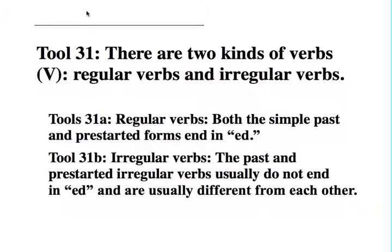Tool 31. There are two kinds of verbs: regular verbs and irregular verbs. Section 31a: regular verbs — both the simple past and pre-started forms end in -ed.